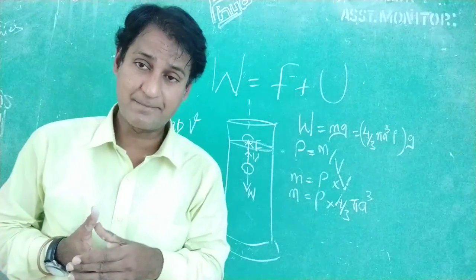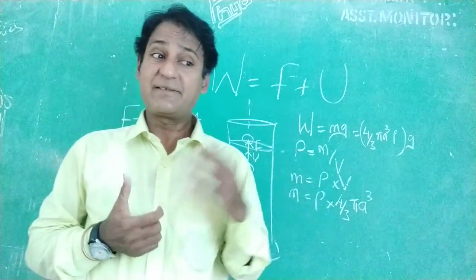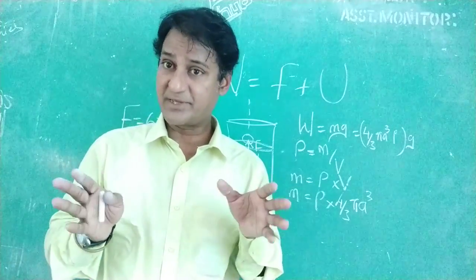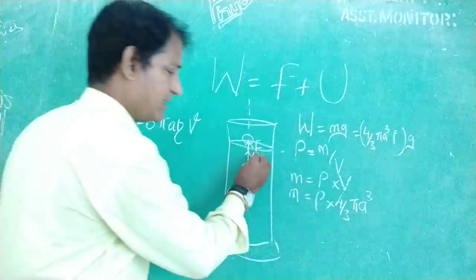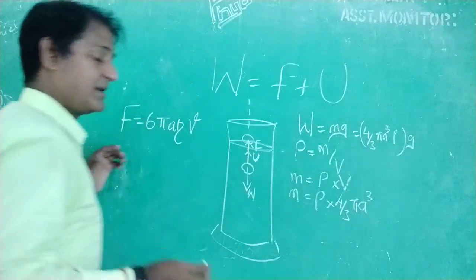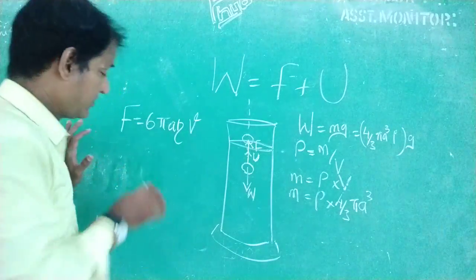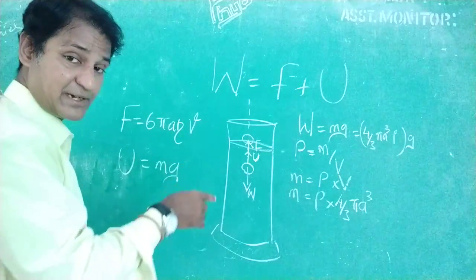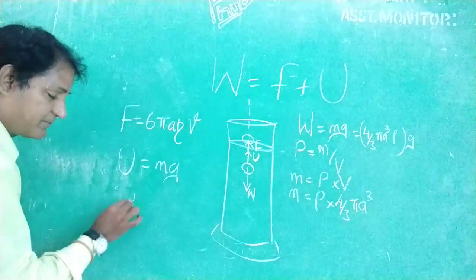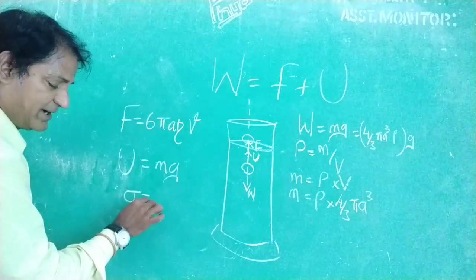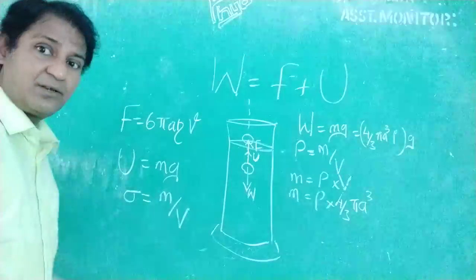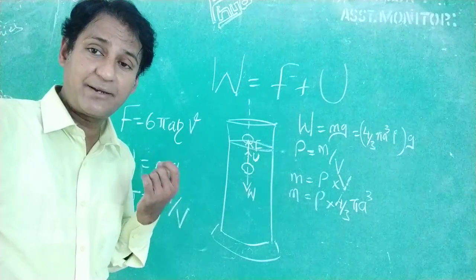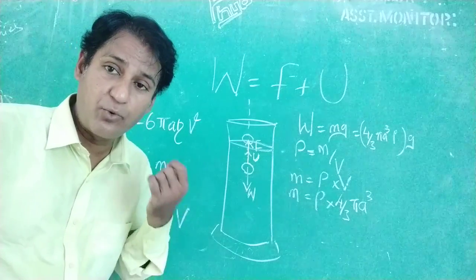So U is called as the upthrust. So even this upthrust is provided by air because air also possesses some viscosity. So this upthrust is also called as upward force, whose formula is also equal to U equals M G. But here, this upthrust is provided by the liquid. So if sigma is the density of the liquid, it is equal to mass by volume. So what is this? This is the volume of the liquid which is equal to the volume of the metal ball.